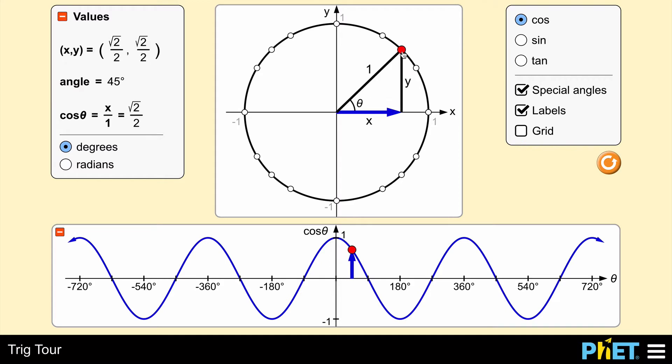You can go through and use this to find all of the ordered pairs. Here at 45 degrees it's √2/2, √2/2 again, and the cosine is just the x.